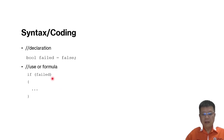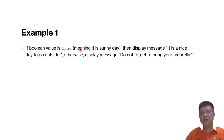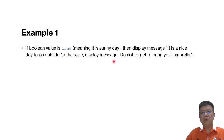If the condition is met, we can proceed to the next statements or process. For example, if a boolean value is set to true — we assume it is a sunny day — we display the message 'it is a nice day to go out.' Otherwise, if it is false, we display 'do not forget to bring your umbrella.' This is quite a simple example.